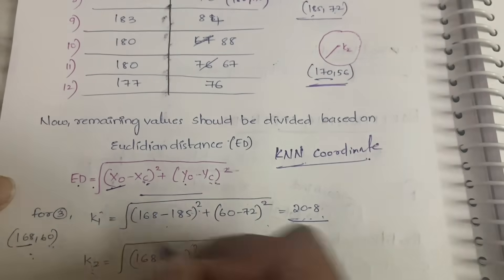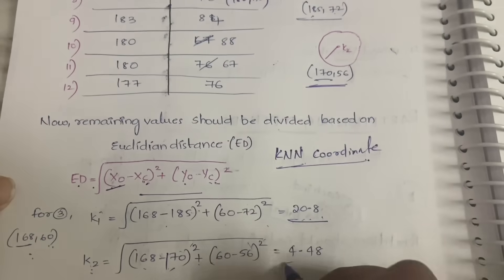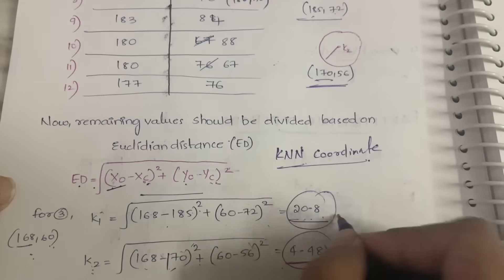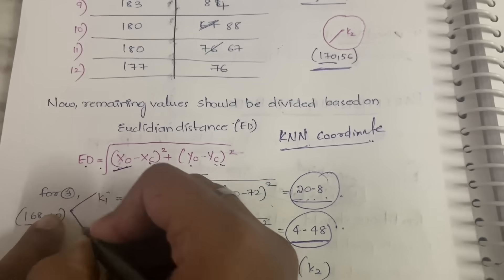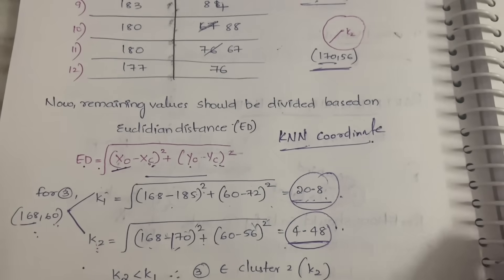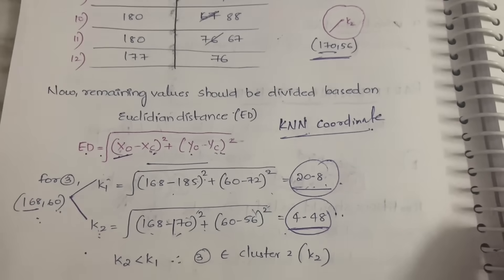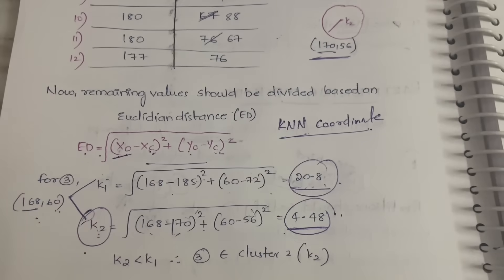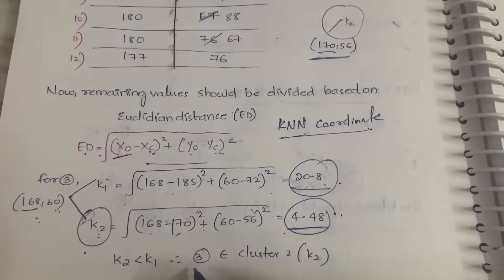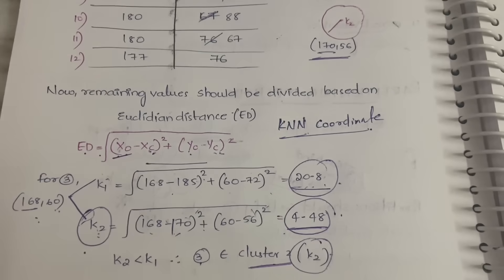Now comparing the two distances, k2 is smaller (4.48 vs 20.8), so the data point is automatically assigned to k2. Therefore, the third row belongs to cluster k2.